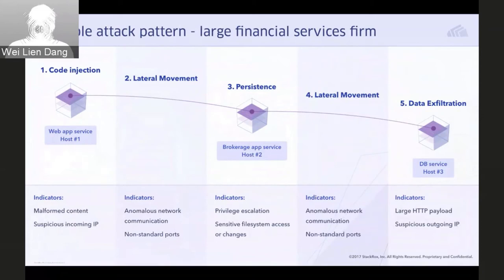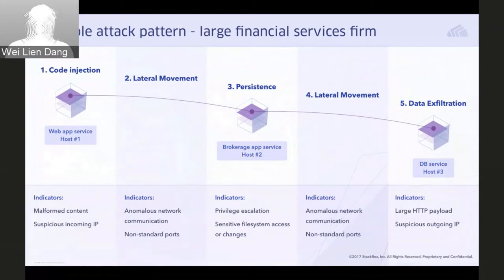In this first case, highlighted on this slide, this was an attack pattern brought to our attention by a large bank. The attack vector consists of multiple phases starting with code injection and resulting in data exfiltration. Moving from left to right, the threat starts with attack delivery via code injection on a web app service. Indicators StackRox looks for include malformed content or suspicious and known malicious incoming IP addresses.